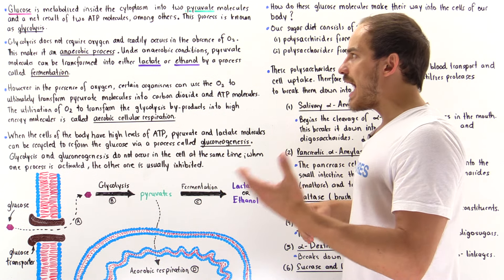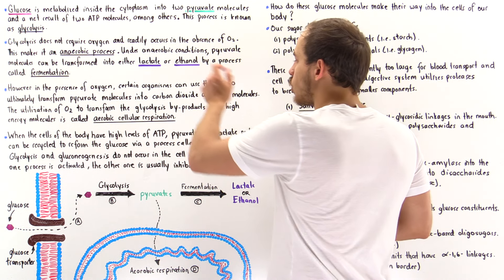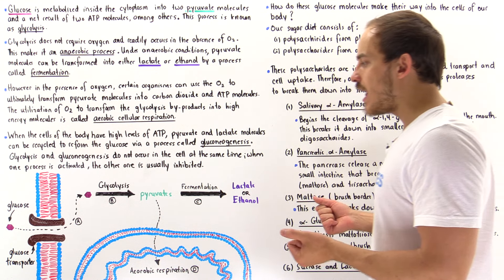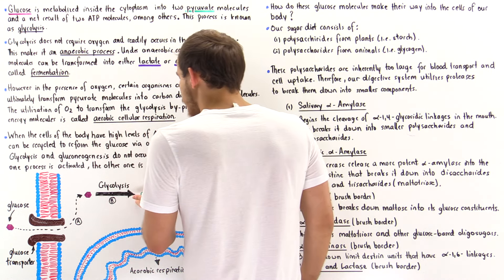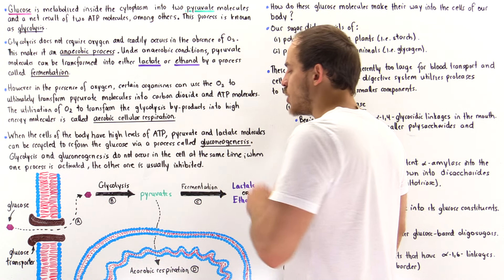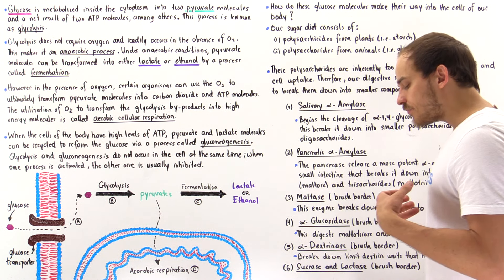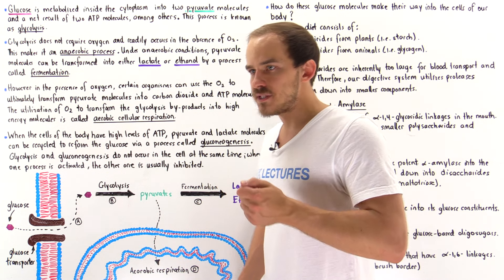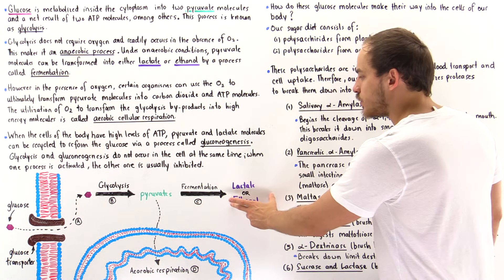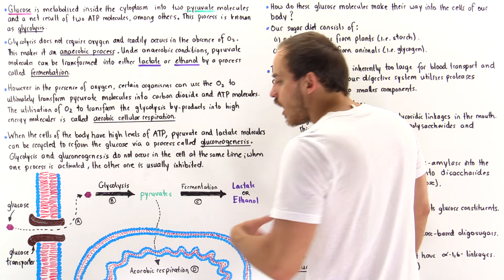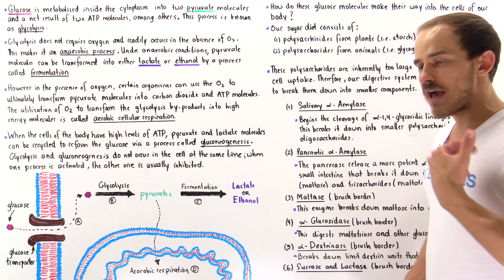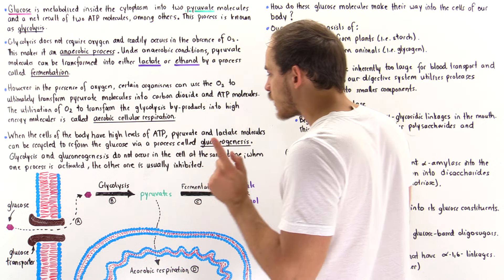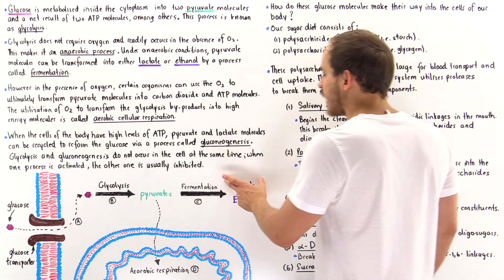In the absence of oxygen, under anaerobic conditions when we don't have plenty of oxygen present inside the cell, these pyruvate molecules will undergo a process known as fermentation. Some cells in nature undergo alcohol fermentation, which produces ethanol from the pyruvate. Other organisms — cells of our body — undergo lactic acid fermentation, which transforms the pyruvate into lactic acid.